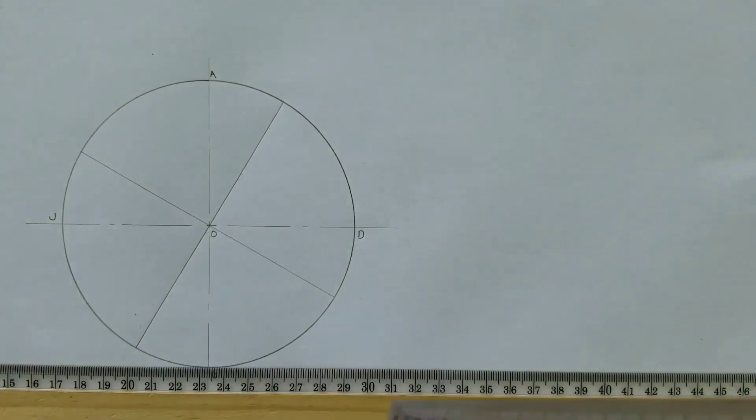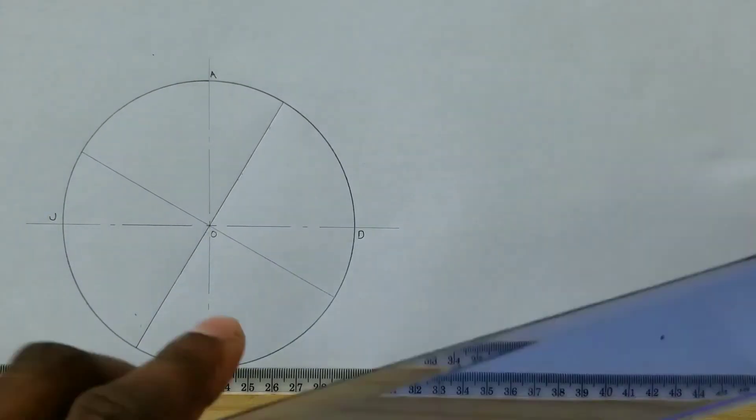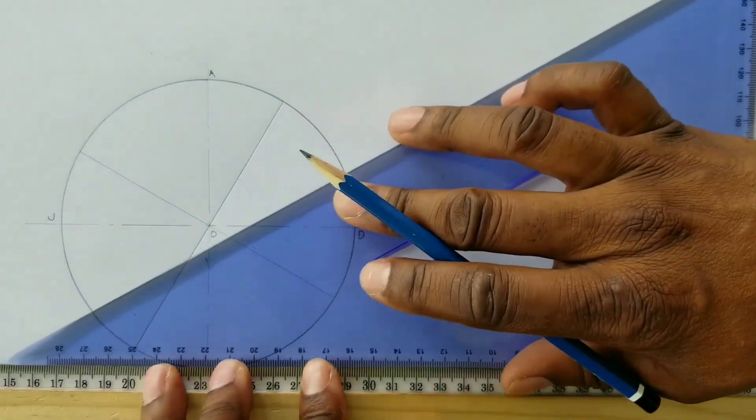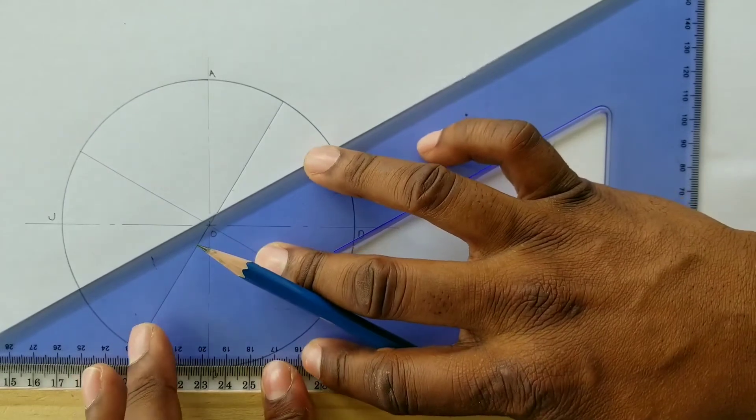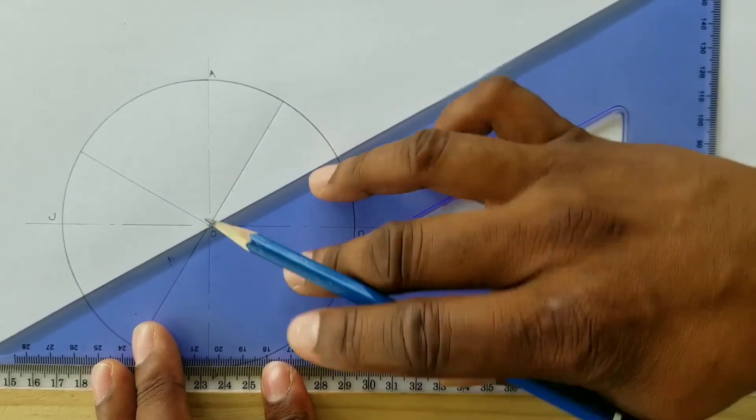We will manipulate our 30 and the 60 angle of our 60-30 set square until we have divided our circle into 12 divisions.